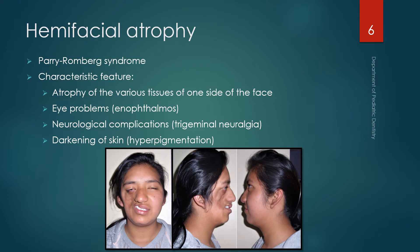Hemifacial atrophy, also called Parry-Romberg syndrome, is characterized by atrophy of various tissues — epidermis, fat, muscles — on one side of the face. It is a progressive, unilateral deformity that stabilizes by around age 20. Along with the atrophy, the child can have eye problems as the eyeballs sink into the socket due to atrophy of ocular muscles. The patient may also have neurological complications like trigeminal neuralgia and hyperpigmentation of the skin around the atrophied area.